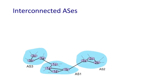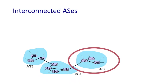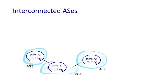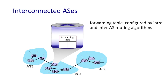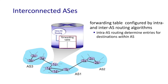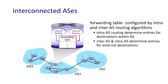Here's a network with three autonomous systems: AS1, AS2, and AS3 — three interconnected networks. Each AS has its own intra-domain routing protocol and could use a different one; that doesn't matter to the other ASes. The intra-domain routing protocol populates a router's forwarding table for destinations within the network, while the inter-domain protocol handles destinations outside.